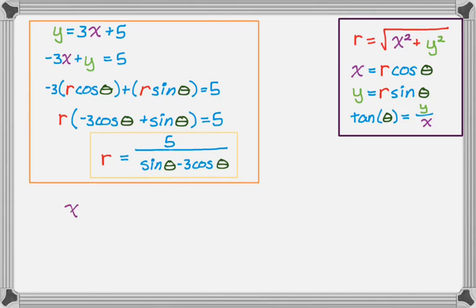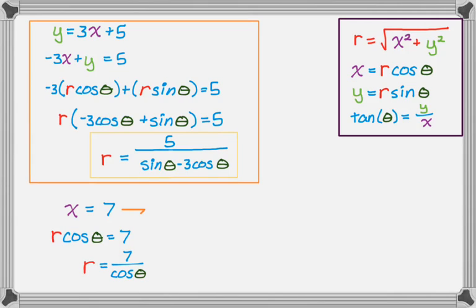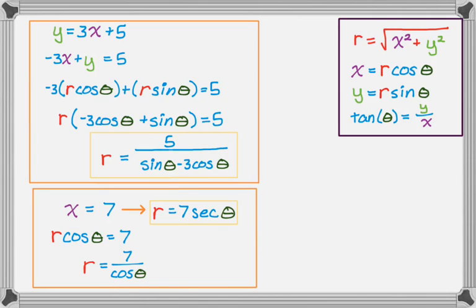Let's look at another one: x = 7, a simple vertical line. Since X equals R cosine theta, we have R cosine theta = 7. Dividing through gives R = 7 / cosine theta, which I'd write as R = 7 secant theta.